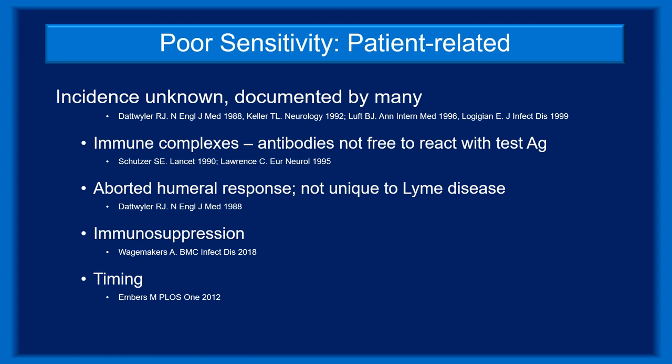Administration of antibiotics very early in the infection can result in actively infected patients who are seronegative. Sufficient antigenic stimulus is needed to produce a humoral response, and antibiotics alone do not eradicate pathogens but can substantially reduce antigen loads. Thus, if treatment early in the disease course reduces Borrelia burgdorferi numbers without eradicating the infection, the humoral response may be aborted prematurely, producing a seronegative disease state. This situation is not unique to Lyme disease — it has been seen in syphilis and coccidiomycosis. Immune suppression can also lead to inadequate antibody production and a seronegative state in actively infected patients.